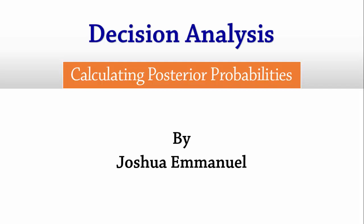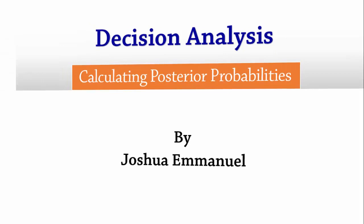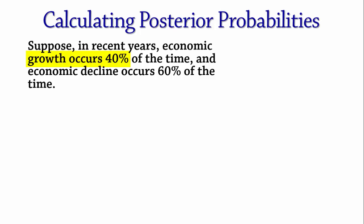Welcome to this decision analysis tutorial for calculating posterior probabilities. Suppose in recent years, economic growth occurs 40% of the time and economic decline occurs 60% of the time. That is, probability of growth is 0.4 and probability of decline is 0.6.